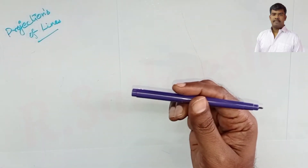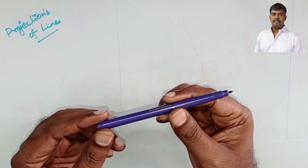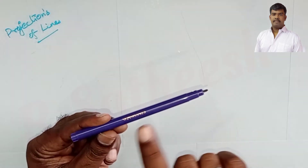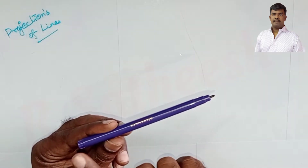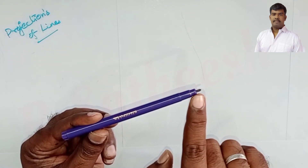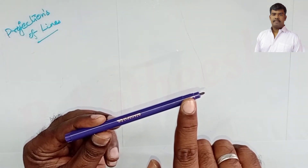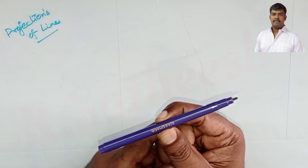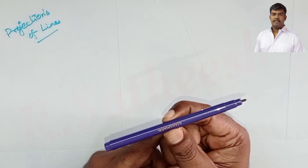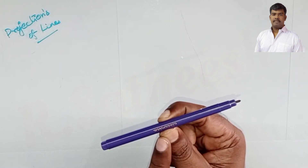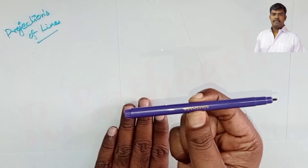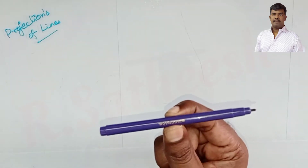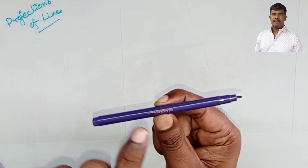Let us assume a line AB that measures 80 mm — from end A to end B the distance is 80 mm. The midpoint of line AB, let us call it M. M stands for midpoint. The M point is 60 mm above HP and 50 mm in front of VP — that is the midpoint, not the end.